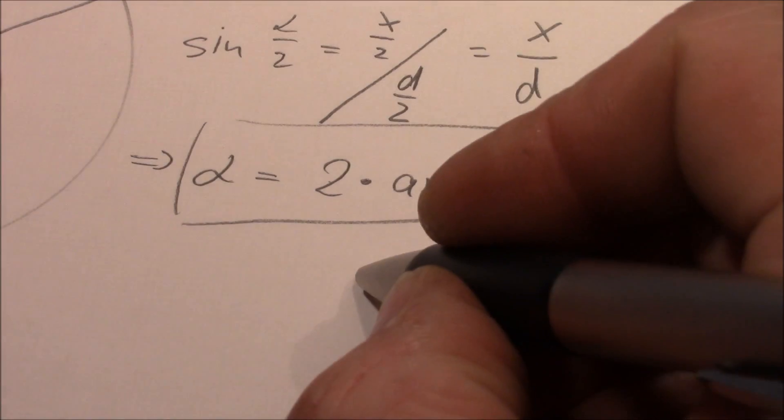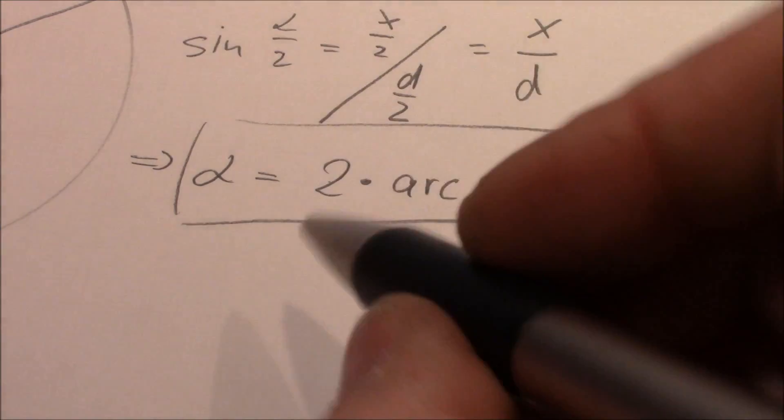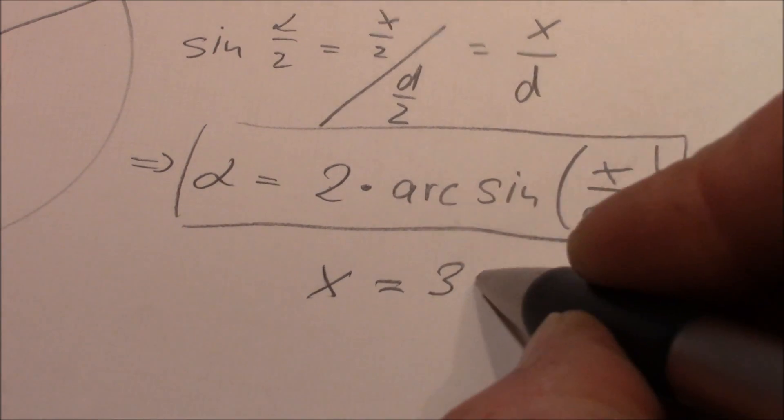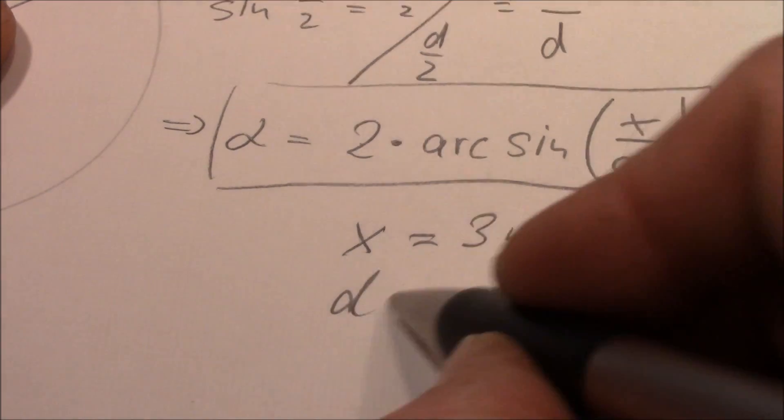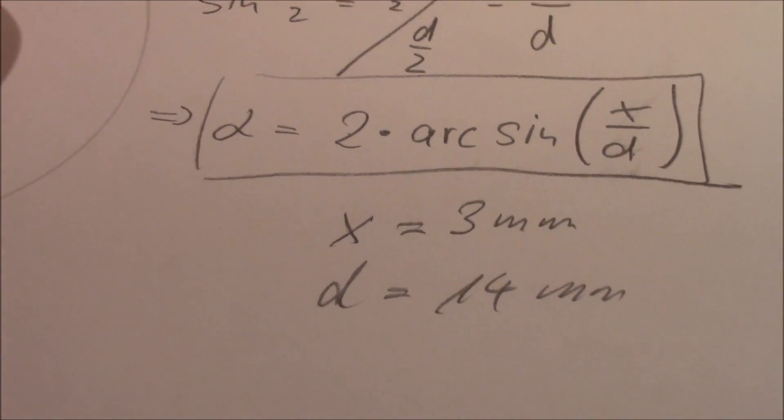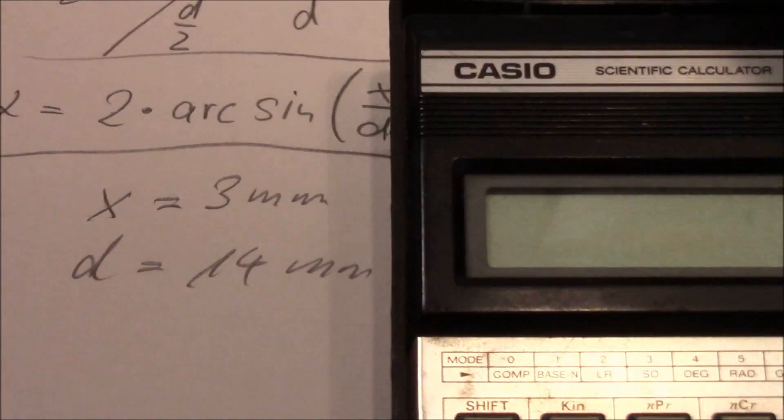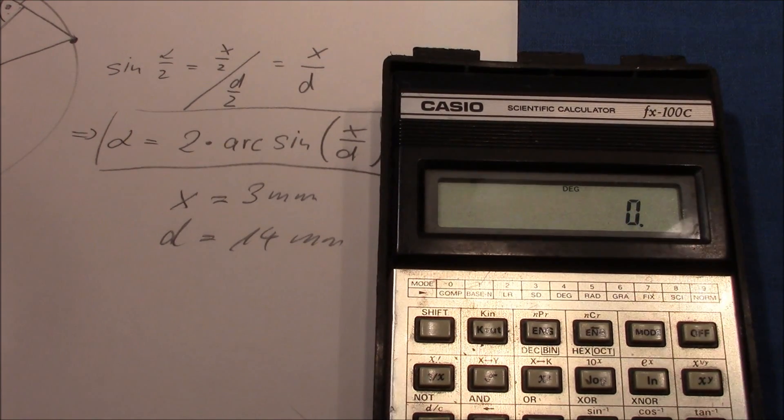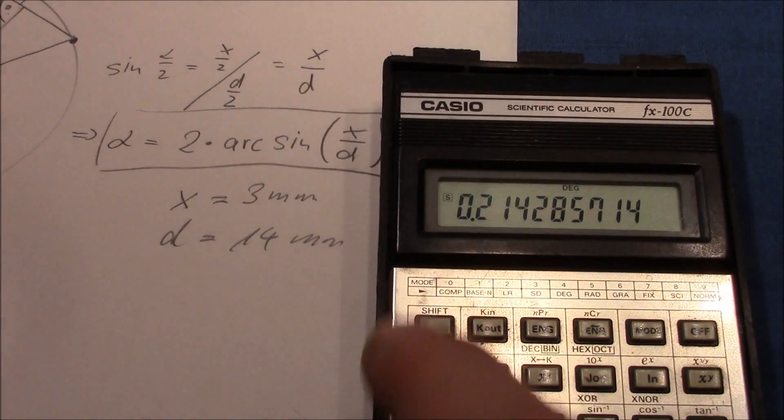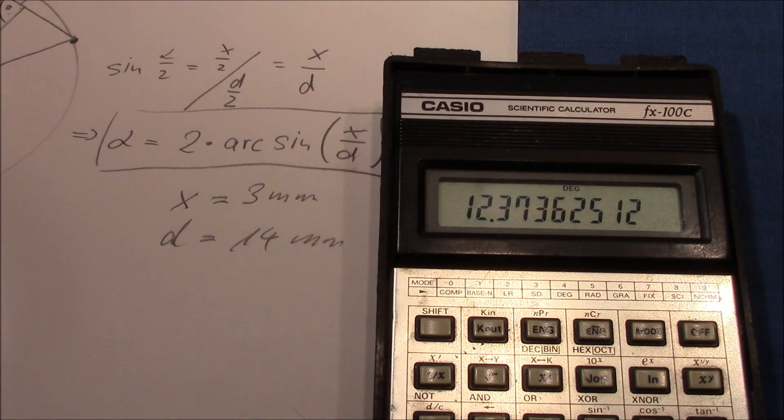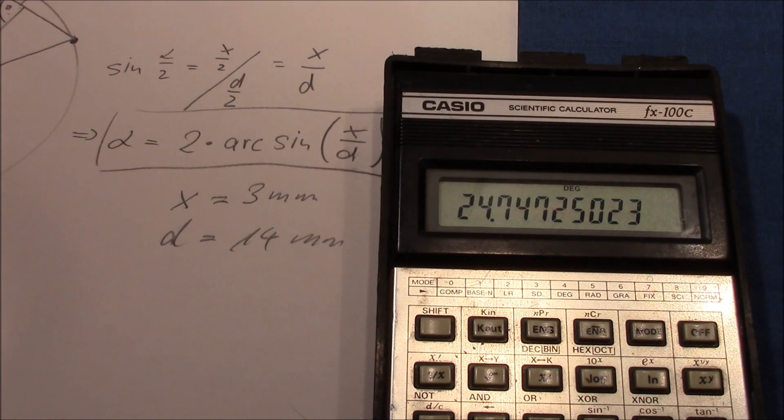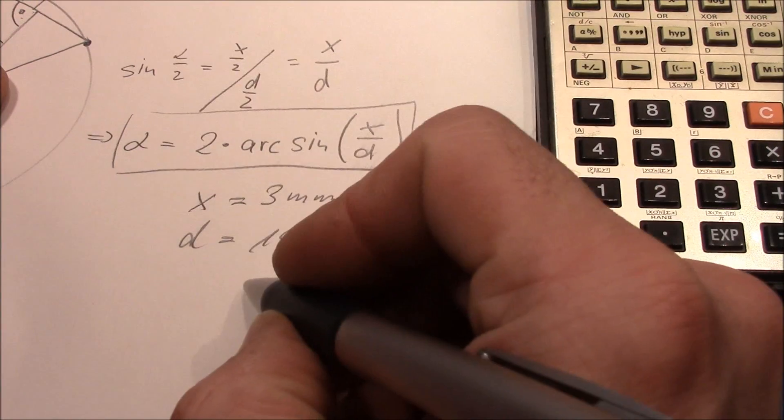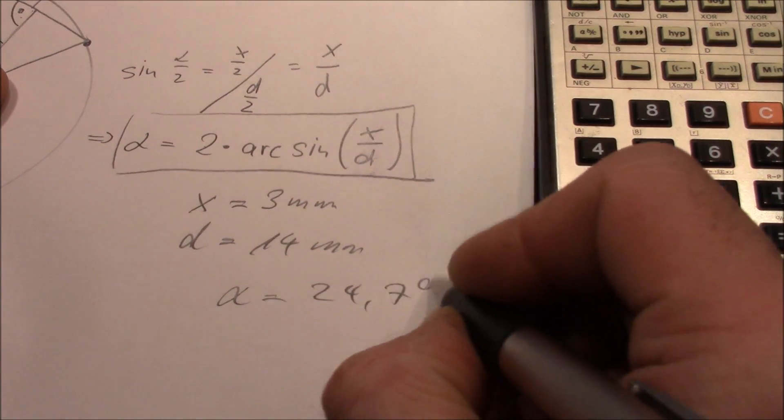But therefore you need to know the angle I can reach with my lock. I have measured x, which is the distance between the marks on the plug, to 3mm, and the diameter is 14mm. Now let's quickly calculate the angle. So it's 3 divided by 14, calculate the inverse of the sinus, multiply by 2, and we get an angle of 24.7 degrees.